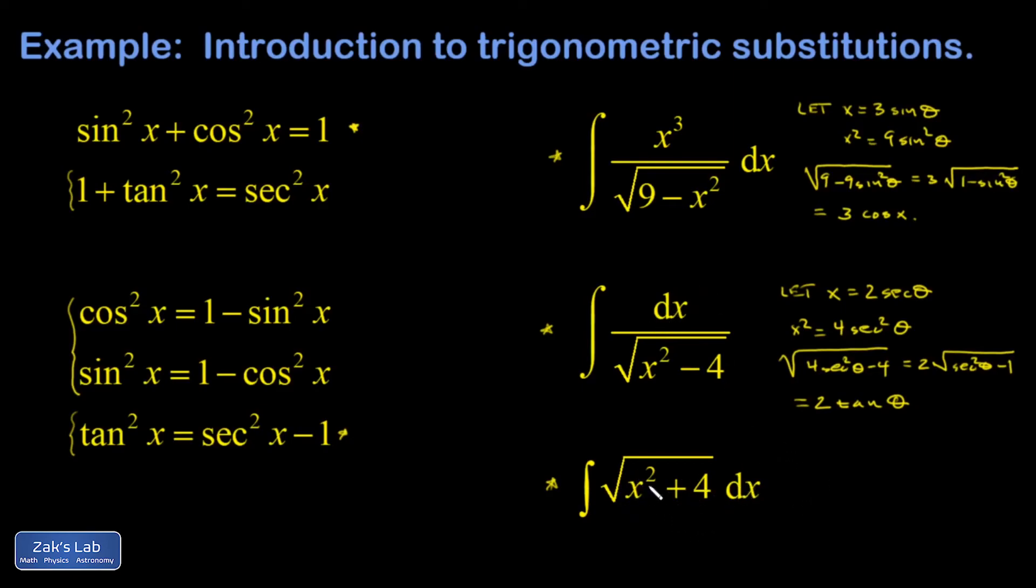Finally, I have a square root of a variable thing plus a constant. That looks like the second one in my list, 1 plus tangent squared. So I'm going to let x equal 2 tangent theta for some new integration variable theta.